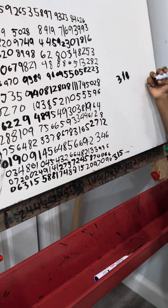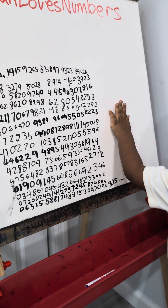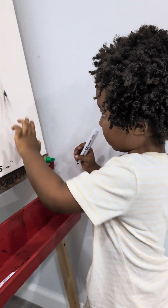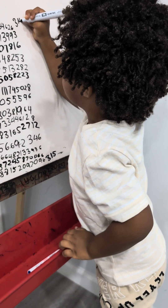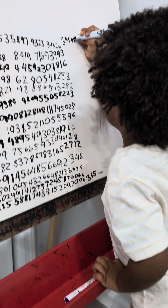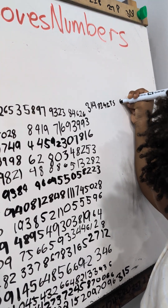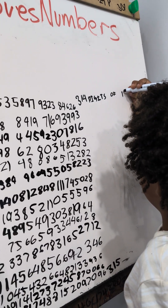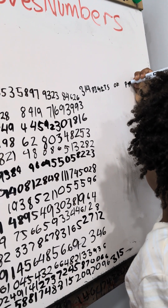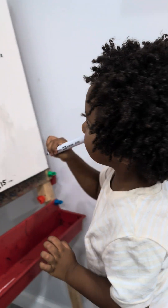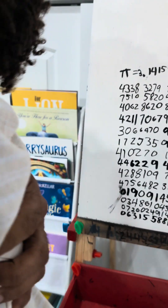All right, so — three hundred and fourteen. We counted three hundred and fourteen. Good job! High five. Three hundred and fourteen digits of pi. Good job. Good job. Good job. Say great job. Great job.